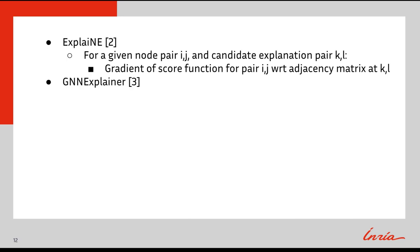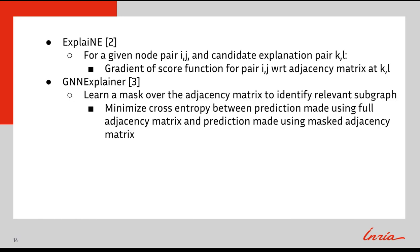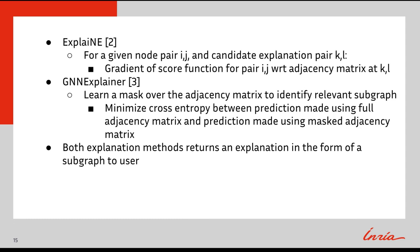Additionally, there is GNN Explainer, designed specifically for graph neural networks. GNN Explainer learns a mask over the input adjacency matrix to identify a relevant subgraph. This is done by minimizing the cross-entropy between a prediction made using the unmasked adjacency matrix and a prediction made using the masked adjacency matrix. What both of these algorithms have in common is that they can return explanations in the form of a subgraph to the user and can be applied to an RGCN post hoc.